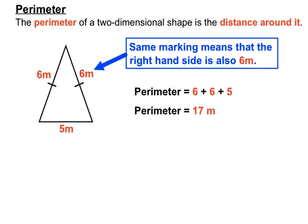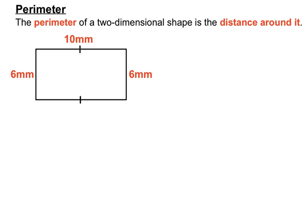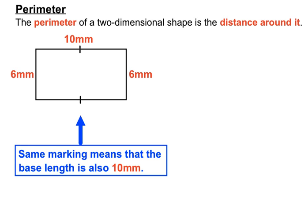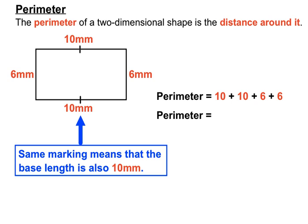We seem to only have three out of four sides here. The top has an individual marking and there's an identical marking on the bottom, so the base is also 10 millimeters. We can then find the perimeter by adding 10 and 10 and another 6 and another 6, getting 32 millimeters.